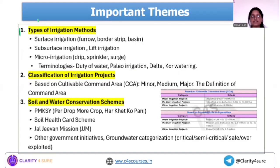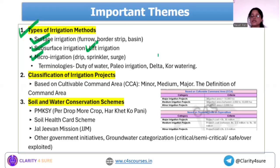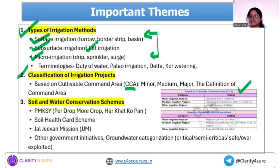The next section covers types of irrigation methods: surface irrigation, subsurface irrigation, lift irrigation, and micro irrigation. Irrigation is the most important part of this syllabus section. Next is the classification of irrigation projects based on cultural command area (CCA), and also classification based on expenditure — go and cover those.